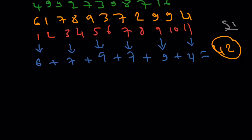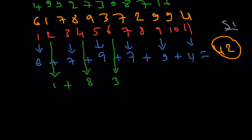Now the next step is to take the even-index digit values. So we take the values at positions 2, 4, 6, 8, and 10 — which are: 1, 8, 3, 2, and 9. These are the even-index digit values.